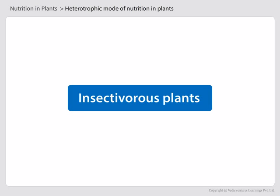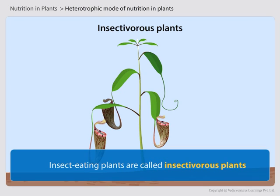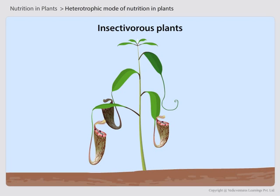Insectivorous plants. There are a few heterotrophic plants which can trap insects and eat them. Such insect-eating plants are called insectivorous plants. For example, pitcher plant. Let us learn about pitcher plants.